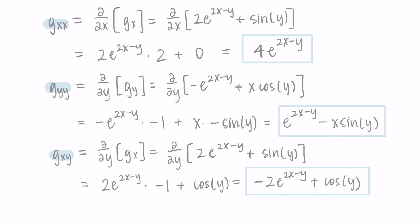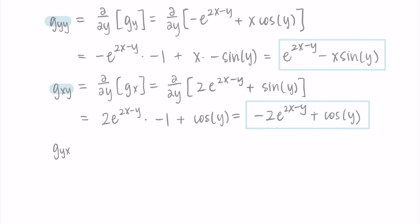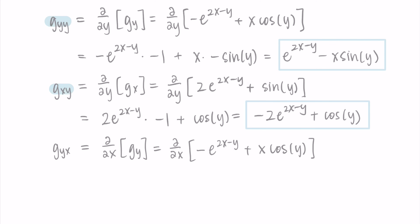Now the other mixed partial: derivative with respect to y then x. We know from Clairaut's theorem that these should be equivalent, so I've technically already found the answer — but I like to verify I didn't make a mistake. Taking ∂/∂x of -e^(2x - y) + x·cos(y): the derivative of -e to the something is -e to the something times 2 (derivative of the exponent), and the derivative of x·cos(y) is just cos(y) since cos(y) is constant. This gives -2e^(2x - y) + cos(y), which matches.